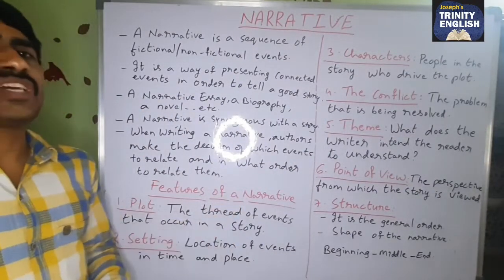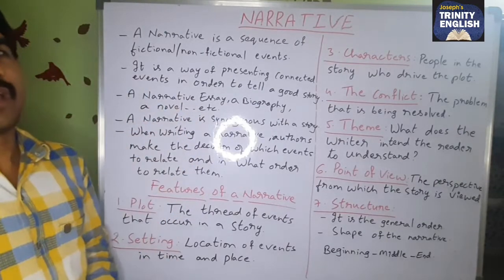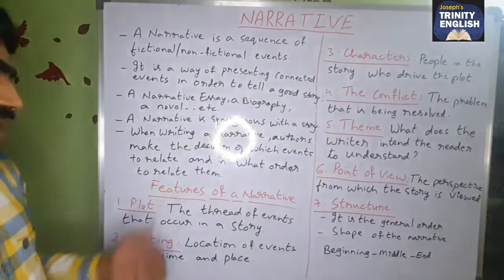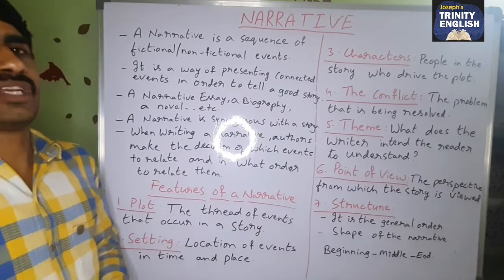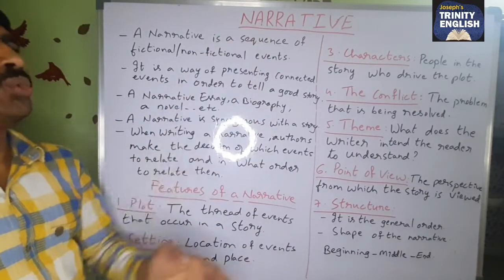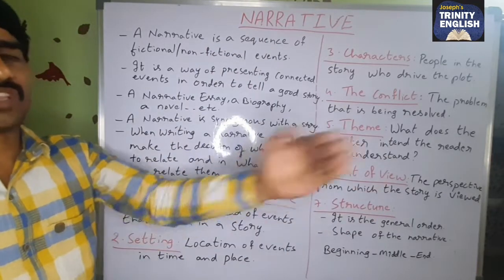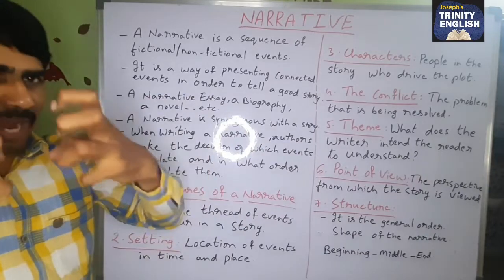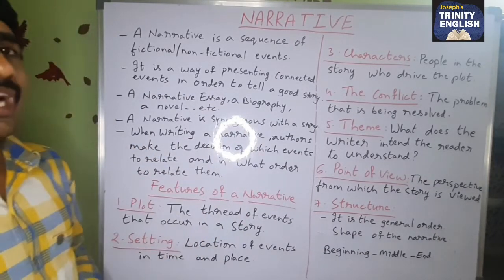What are the features of a narrative? The first one is plot. The plot is the thread of events that occur in a story — how the events are sequenced one after the other, how they are brought together and connected. This connectivity is known as the plot.